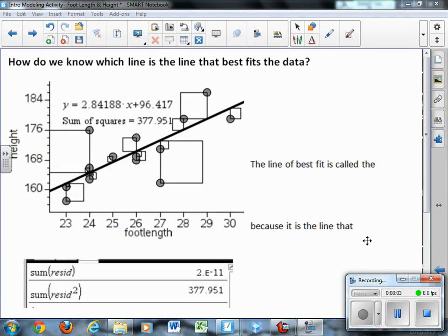If we're looking at a group of points that has a linear trend but is not exactly linear, much like our foot length and height data, how do we know which particular line is the best line, the line that best fits the points?